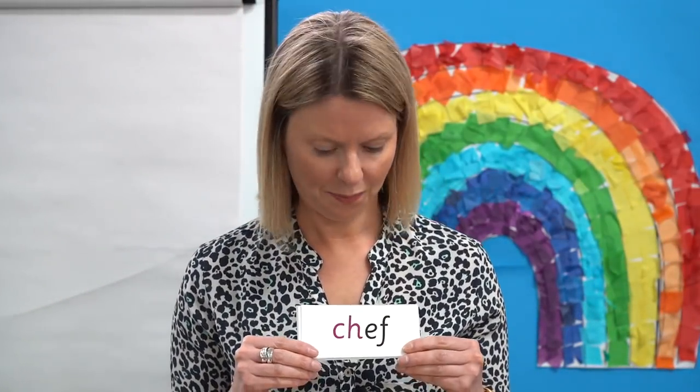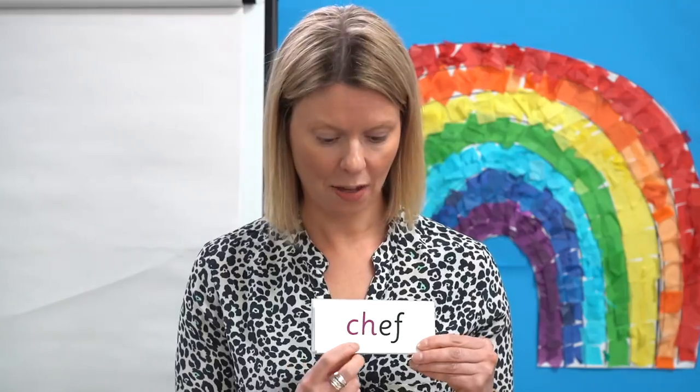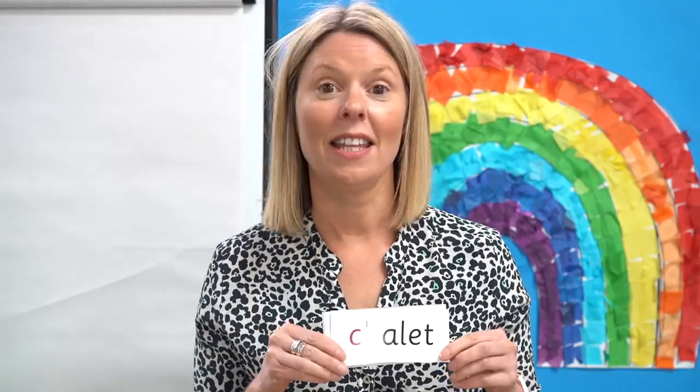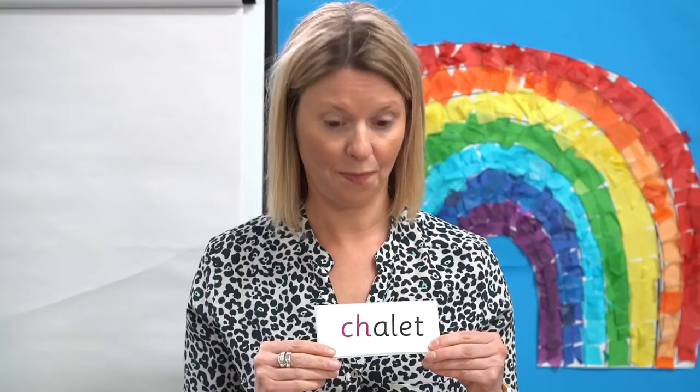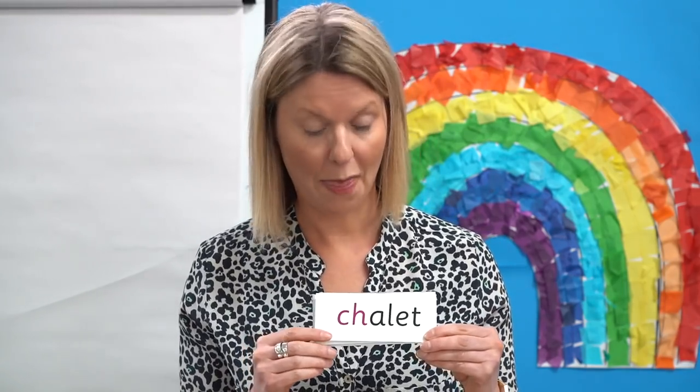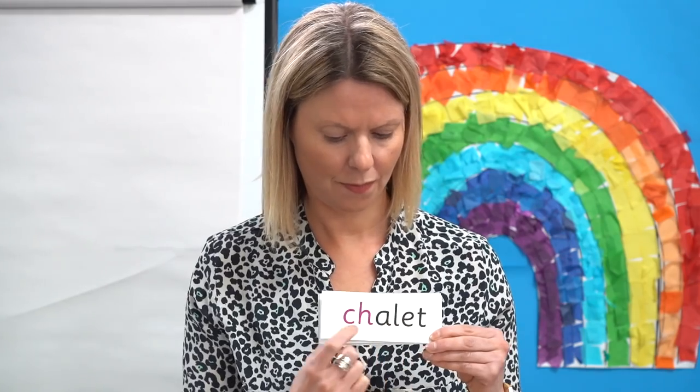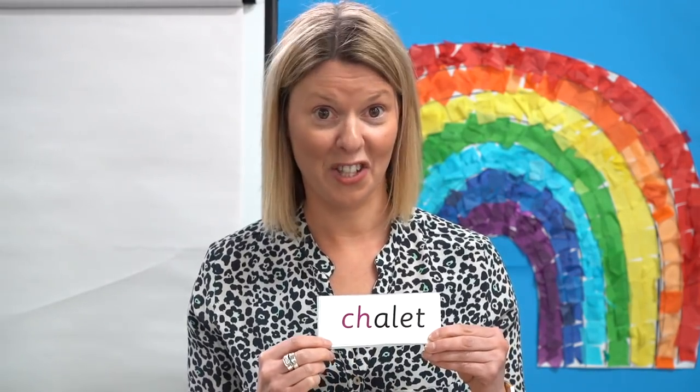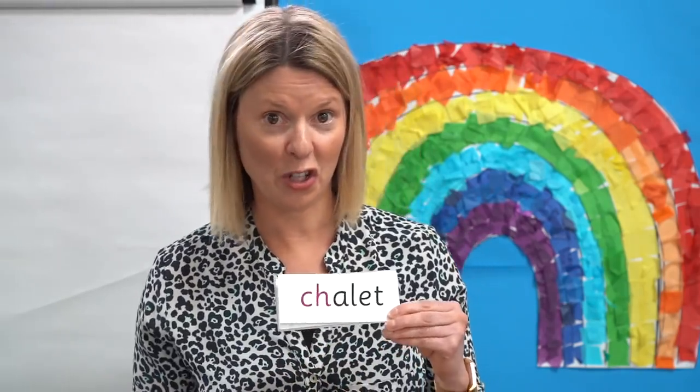Now let's read some words with our new grapheme for the sound SH. Sound talk each grapheme and then blend to read the word. And together. Sh-e-f. Chef. Do you remember? This is the hat that the chef wears. Let's try another word. In this word these two letters make the A sound. Off you go — sound talk it and then blend it. And together. Sh-a-l-ay. Chalet. Did you get it right?